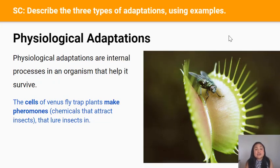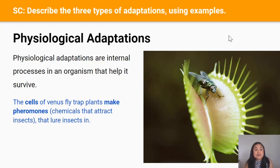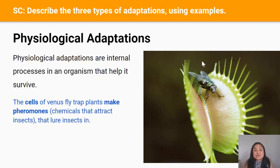Physiological adaptations are internal processes in an organism that help it survive — the biological or chemical processes that happen inside the organism or inside their cells. For example, the Venus flytrap makes pheromones inside its cells and releases them into the environment. Pheromones are chemicals that smell nice to some insects and animals, and these nice-smelling chemicals lure flies to the Venus flytrap.